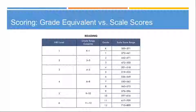TABE 11 and 12 uses scale scores instead of grade equivalent scores. It may be helpful to have the correlation charts on hand — if you print out this PowerPoint, you'll have the chart to correlate a scale score to a grade level equivalent score to better connect customers to college level and training programs. For example, if a customer gets a scale score of 576, that corresponds to a grade level equivalent of 9 to 10.